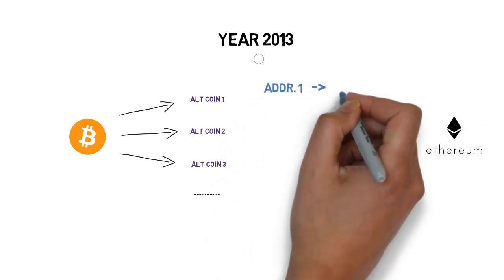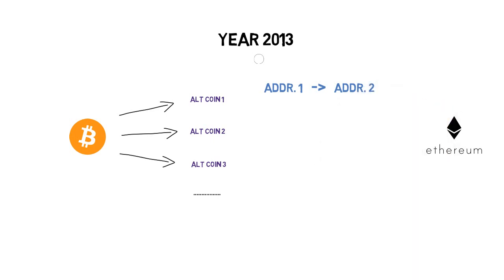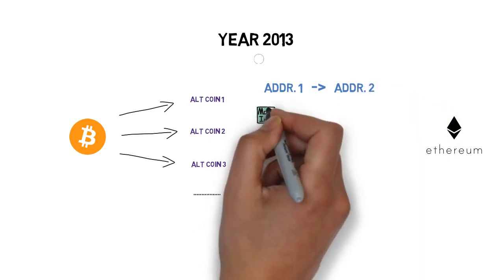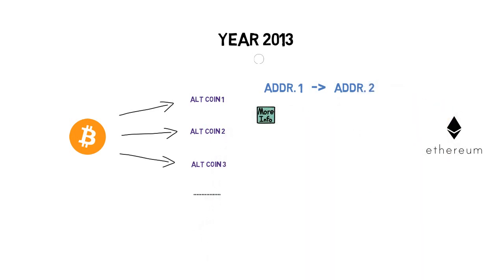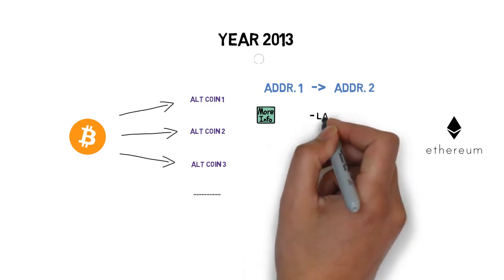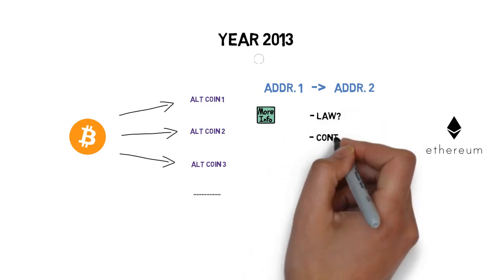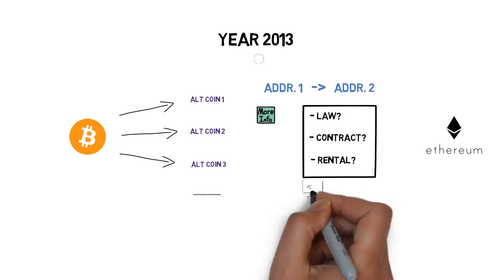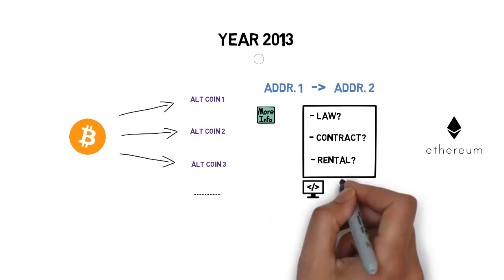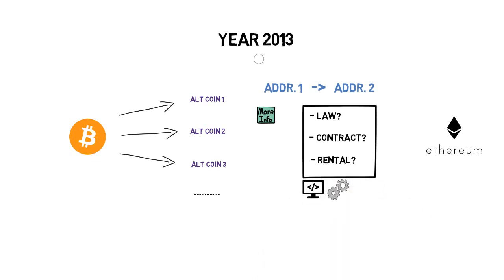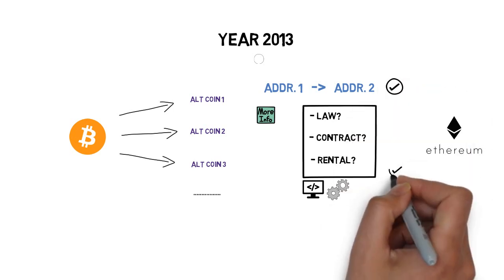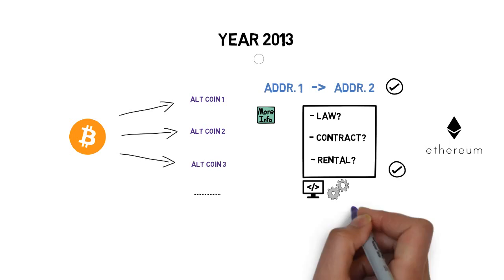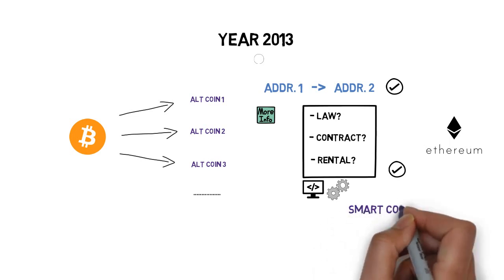Bitcoin is about conveying value from one address to another. But there is a story behind. There is a reason to transfer the value. Was it the law? Was it the contract? Was it the rental agreement? People in Ethereum projects start to think, what about if we can create a programming language to automate this logic behind, so that when the transaction happens, then the logic happens as well. This is so-called smart contract.